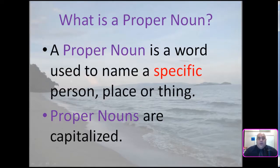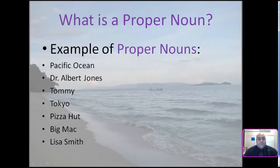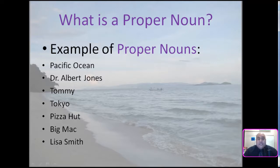Proper noun. A proper noun is a word used to name a specific person, place, or thing. Proper nouns are always capitalized in sentences. Examples of proper nouns: Pacific Ocean, Dr. Albert Jones, Tommy, Tokyo, Pizza Hut, Big Mac, Lisa Smith. These are all examples of proper nouns and they're all capitalized.